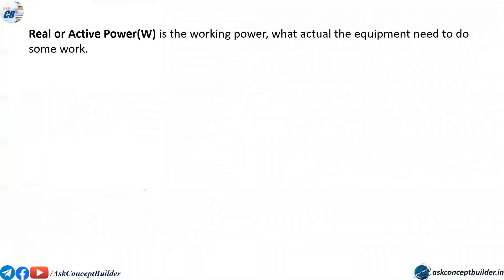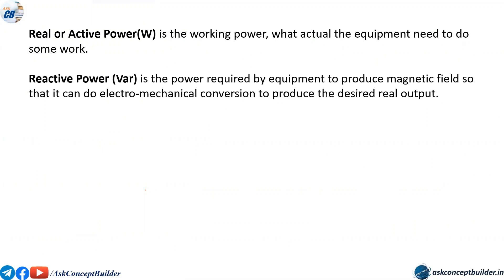First, we will get to know some basic concepts. What is real or active power? It is the working power — what the equipment actually needs to produce the output, meaning what the equipment delivers as the load. What is reactive power? It is the power which we don't see as the output, but it is actually needed by any machine to produce the magnetic field inside it. This magnetic field is very necessary for electromechanical conversion. That's why any machine will consume both active and reactive power.